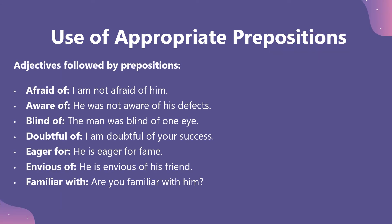Certain adjectives followed by prepositions: Afraid of — 'I am not afraid of him.' Aware of — 'He was not aware of his defects.' Blind of — 'The man was blind of one eye.' Doubtful of — 'I am doubtful of your success.' Eager for — 'He is eager for fame.' Envious of — 'He is envious of his friend.' Familiar with — 'Are you familiar with him?'